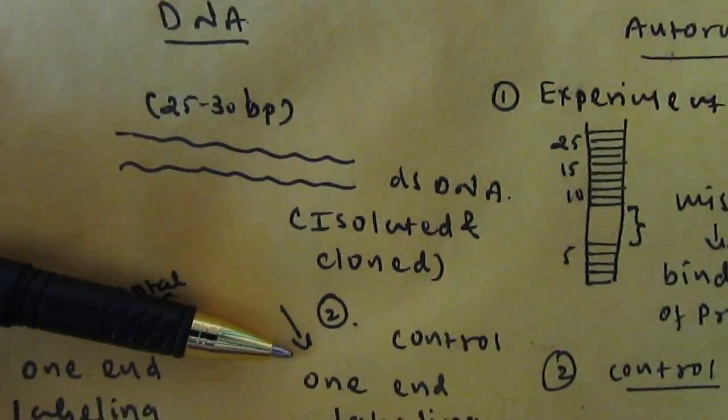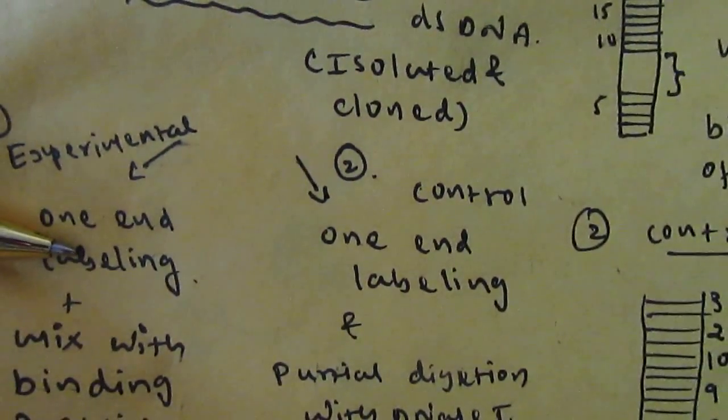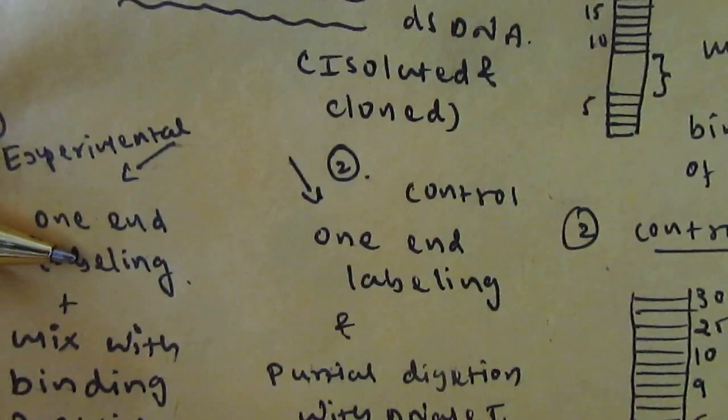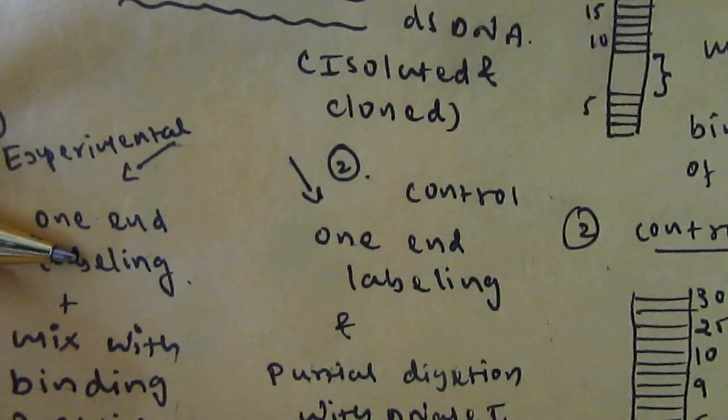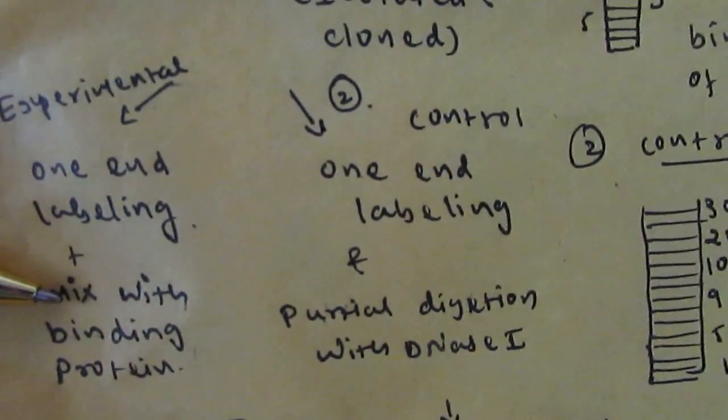and the second one is the control sample. In the experimental sample, one end of the double-stranded DNA molecule is labeled with radionucleotide labeling. Then, the binding protein molecule is mixed with this labeled nucleotide, and this protein will go and bind to a specific location.